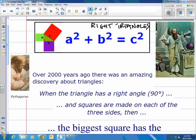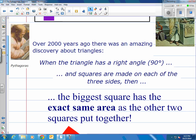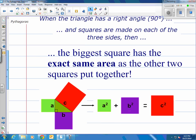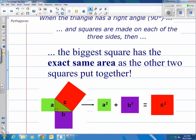When the triangle has a right angle and squares are made on each of the three sides and you can see that up in the picture there when you make the squares off the sides of the triangle then the biggest square has exactly the same area as the other two squares put together.